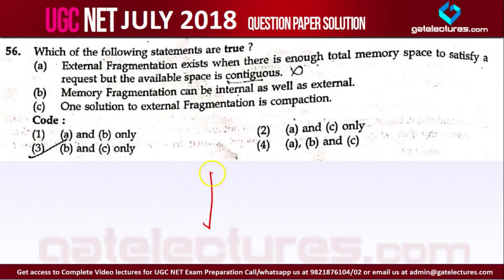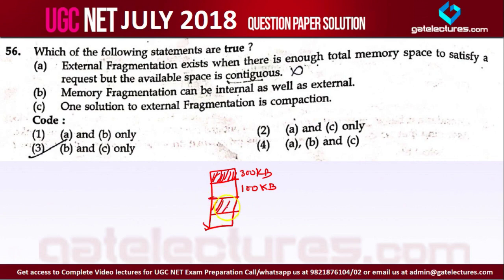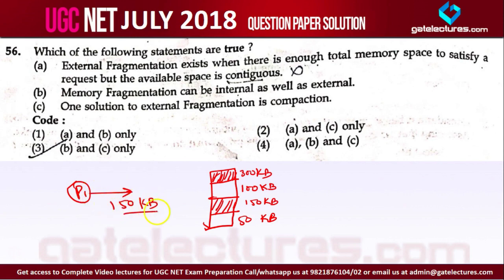For example, consider this main memory layout: 300 KB is occupied, followed by 100 KB which is free, then 150 KB which is occupied, and 50 KB which is free. If a process demands 150 KB, you know that 150 KB is available but it is not contiguous, so you cannot allocate it to process P1.